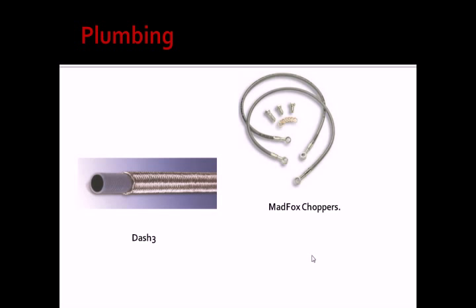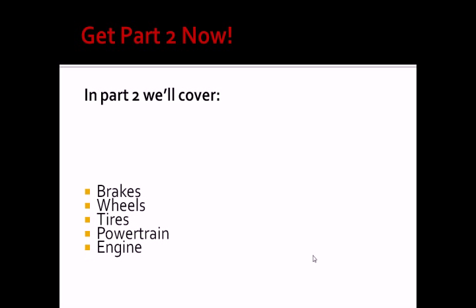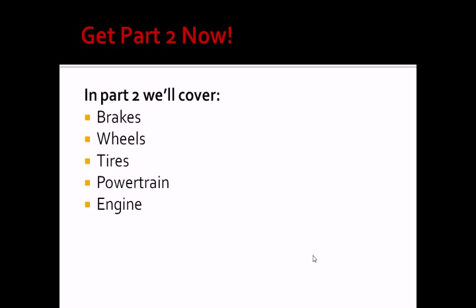So that's it for part one. In part two, we're going to cover brakes, wheels, tires, powertrain, and the engine. Thanks for watching part one by Custom Chopper's Guide, How to Build a Motorcycle, and we'll see you in part two.